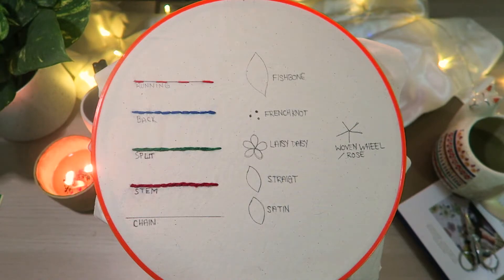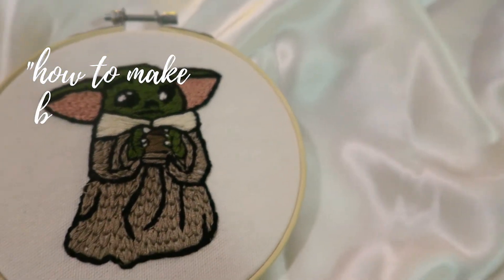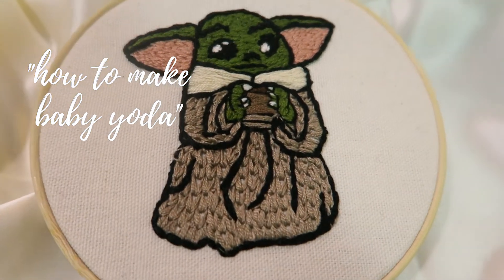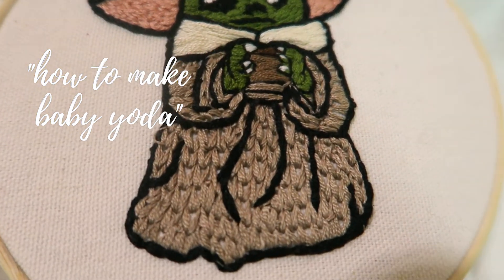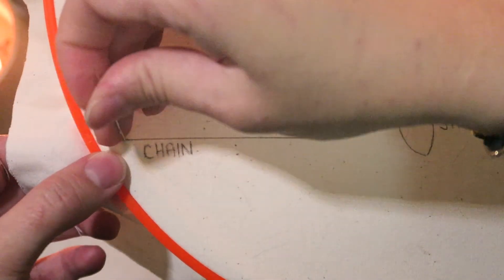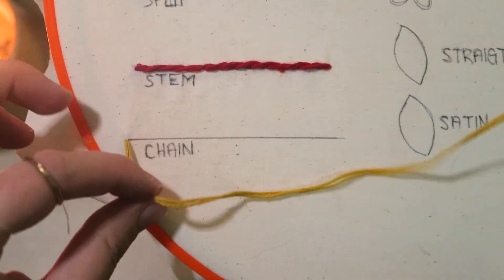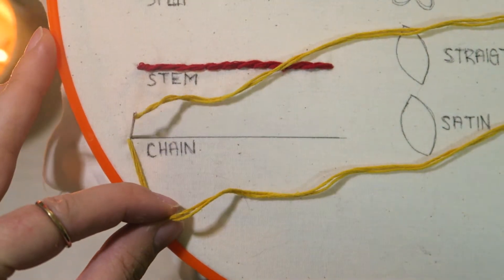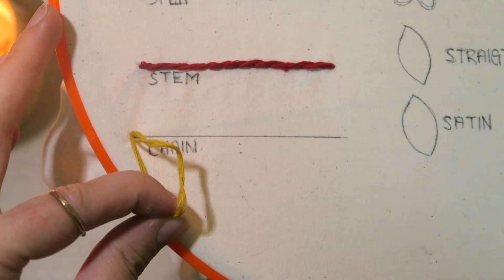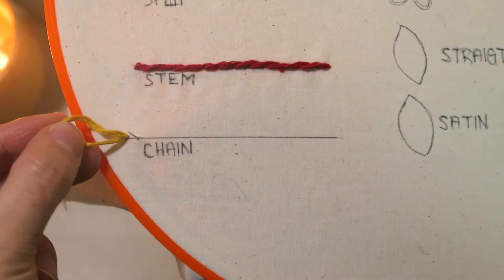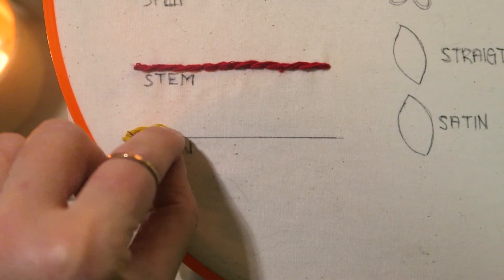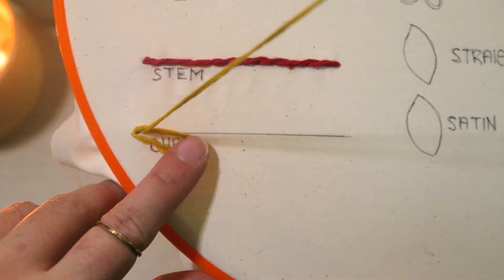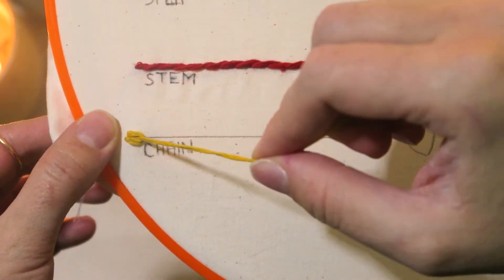Our fifth stitch is the chain stitch. My most popular YouTube video is a baby Yoda and we use this stitch to complete his outfit. I just love the texture that this stitch gives. Start at the back of the hoop and pull the needle and thread all the way through to the front. Now we're going to go back down getting as close as we can to the hole we just created. We're going to form a small loop here. Then we bring our needle back up to the front through the loop and this will create the chain. Repeat this process until you're done.